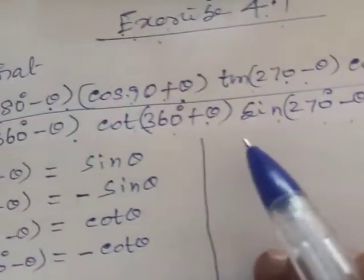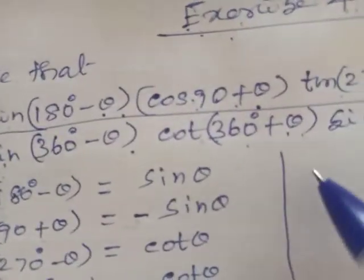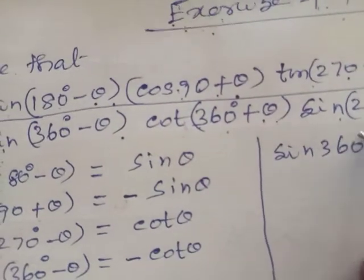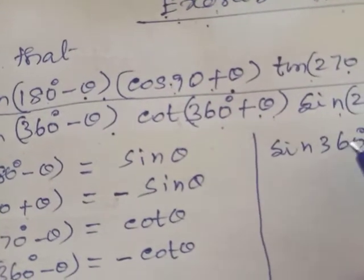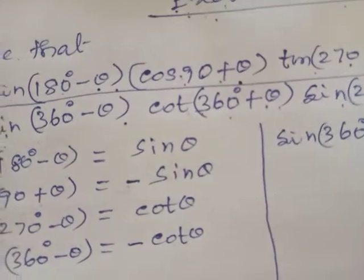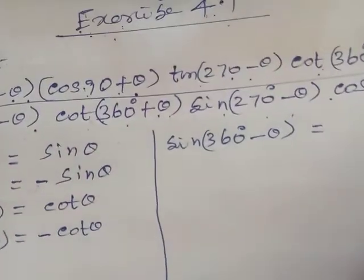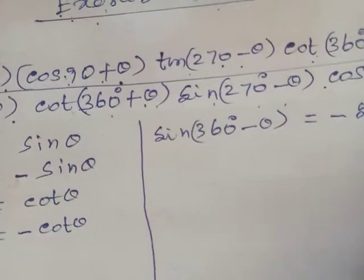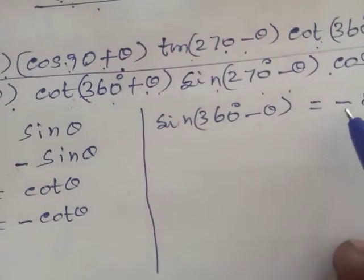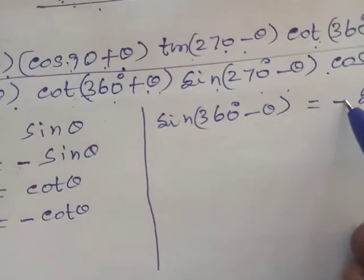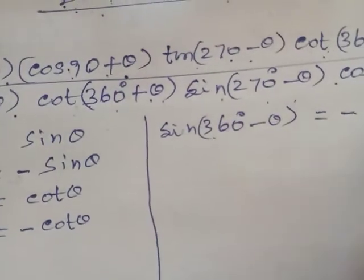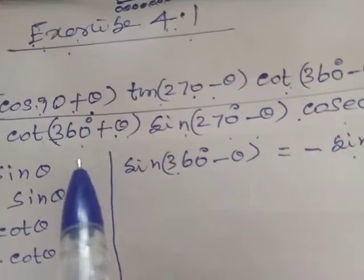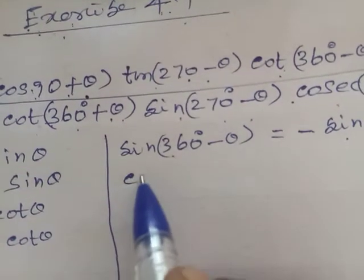Now for the denominator values. The first term is Sin(360-θ): since 360-θ is in the fourth quadrant, and sine is negative in the fourth quadrant, Sin(360-θ) equals minus Sin θ. Next, Cos(360+θ) equals Cos θ. Then minus Sin θ for the next term.